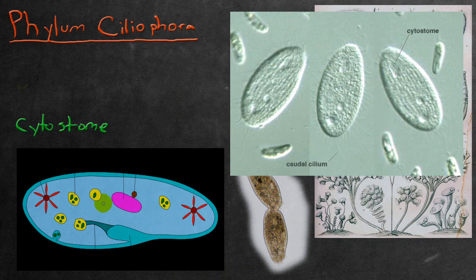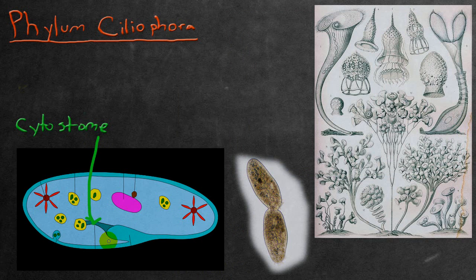The actual cytostome in the diagram below is located right about here. The food particles that the organism would absorb are funneled in by something called the gullet. The gullet is the actual groove here that's seen within or indented into the cell.